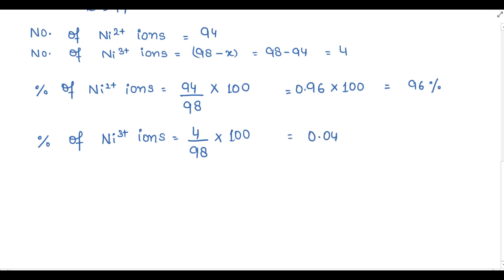And the percentage of Ni³⁺ ions equals 4 divided by 98 into 100, which gives 4 percent.